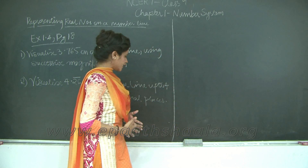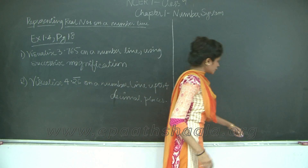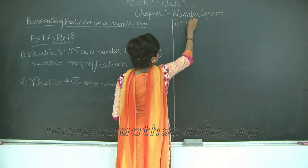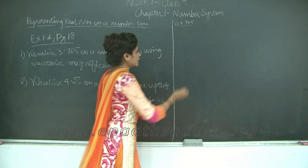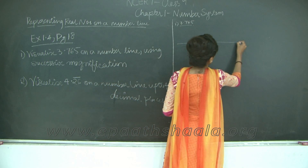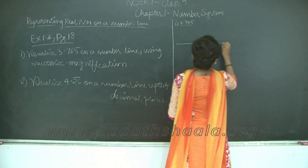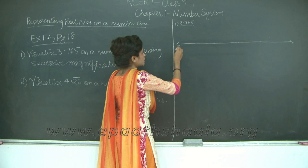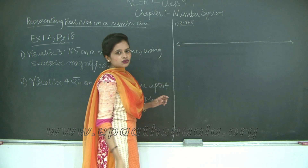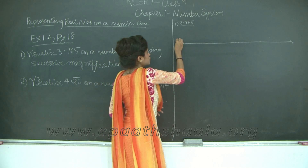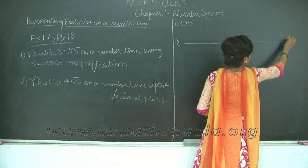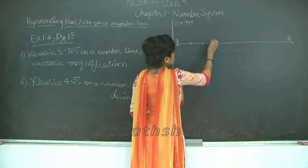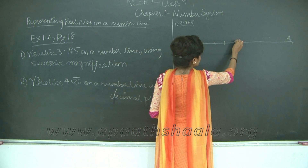Let us see how we are going to plot it on the number line using successive magnification. I am going to draw my number line. Please make sure you are using a ruler to draw your number line in your books as well as in your exams. Now 3.765 is going to lie between 3 and 4, so I mark 3 and 4 on my number line and divide it into 10 equal parts. Please use a ruler to mark these points at equal distances.